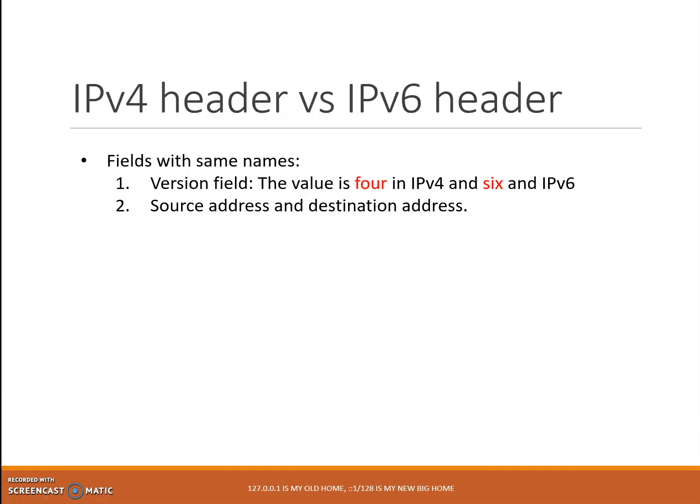A comparison between IPv4 header and IPv6 header. First, IPv4 fields that have the same names as those in IPv6. We have two fields: version field, and source address and destination address. The values of these fields are different in both protocols. For example, the version field value in IPv4 is 4, and 6 in IPv6. In source and destination address, the biggest difference is that the 32-bit addresses in IPv4 have been increased to 128-bit in IPv6.